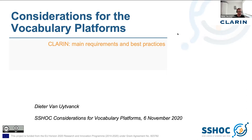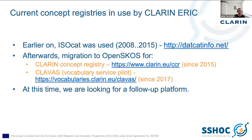First, a bit of history. We've been using all kinds of concept registries already for quite a while, and I saw that many of the people today in the online meeting have also actually contributed to the creation of some of these platforms. In 2008, we started with a platform called ISOCAT for the registration of data categories. This platform was running until 2015, with over a thousand entries, many of them translated, and a lot of effort was put into creating definitions and an organizational framework, including a kind of ISO stamp of approval on certain groups of concepts.